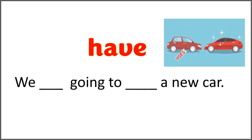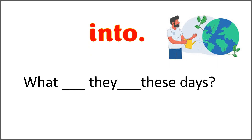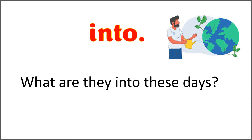The given word is 'have.' We blank going to blank a new car. Use the word 'have' with 'are' to complete this sentence. We are going to have a new car. The given word is 'into,' and the sentence is 'what blank they blank these days?' Use the word 'into' with 'are.' What are they into these days? The guy is planting a tree — looks like they are looking after the planet these days.